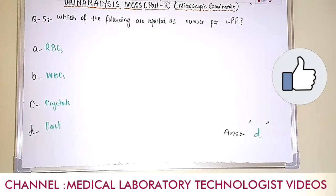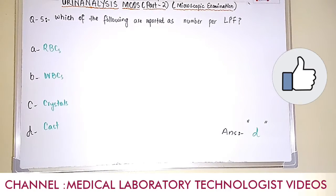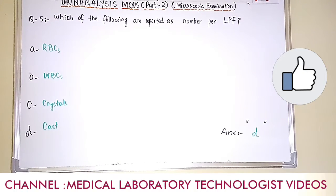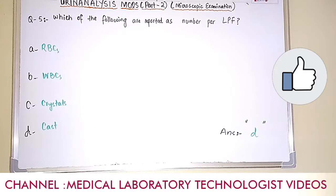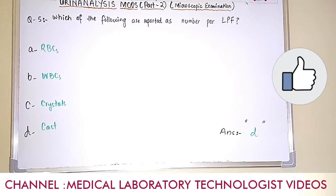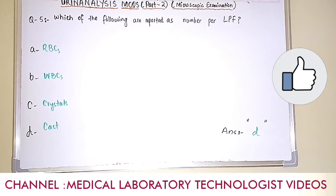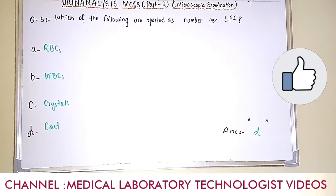Question number 5. Which of the following are reported as number per LPF — low power field? Option A: RBCs. Option B: WBCs. Option C: crystals. Option D: cast. The answer is option D, cast. Cast is reported per low power field because casts are mostly larger in size and cannot be adequately judged under high power field.